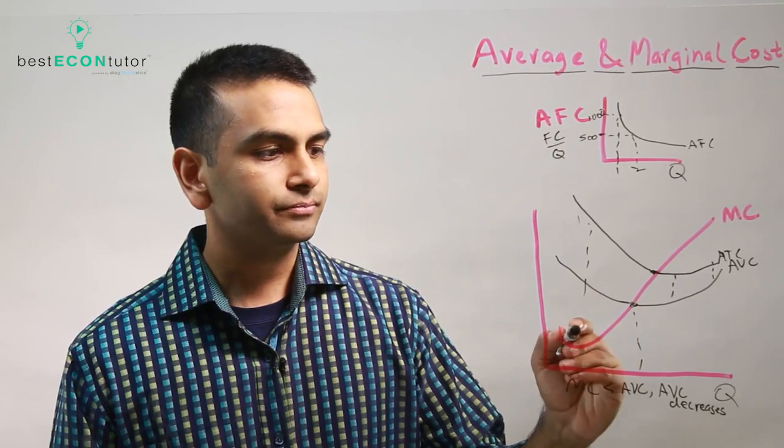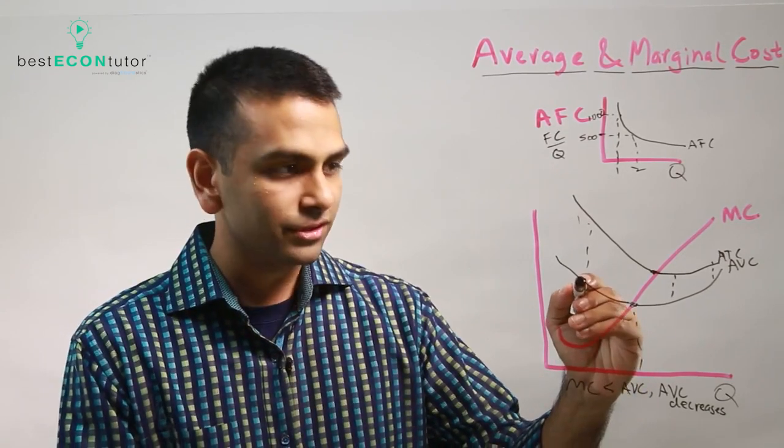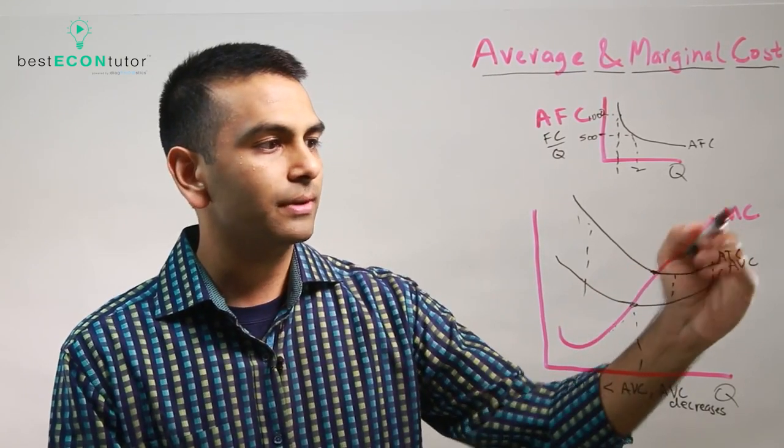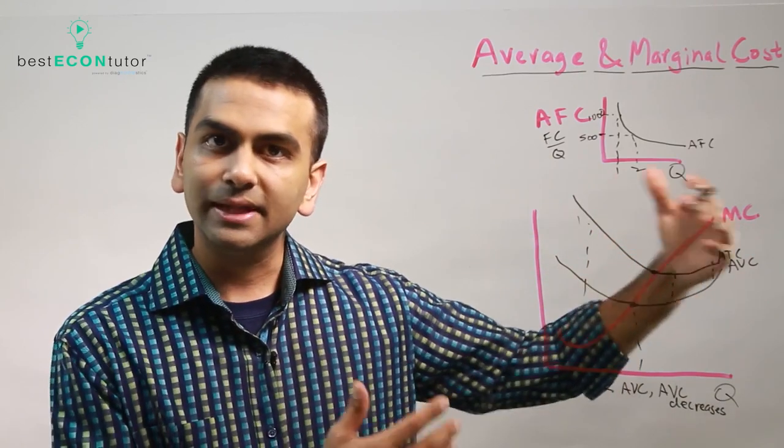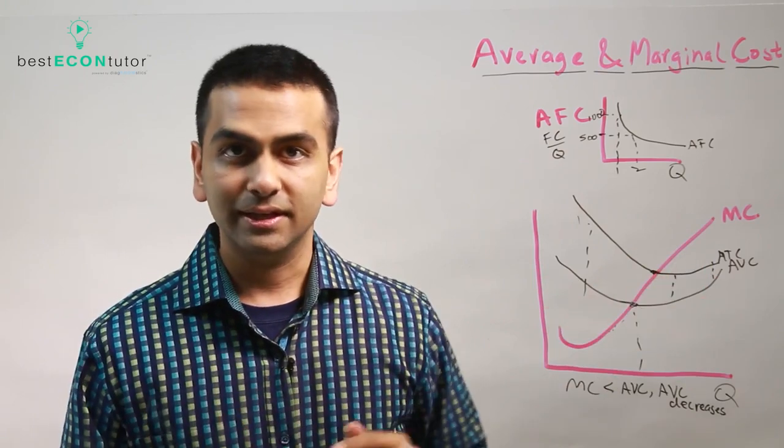So that's why if you look here, if the marginal cost, the cost of making one more fork, is less than the average, that's going to bring the average price down. But then after they intersect, now the marginal, the red curve is above, and that's going to bring the average up. If you add a 40-year-old to the group of 20-year-olds, it's going to bring the average age up. So that's that relationship over there, and same is true for ATC.